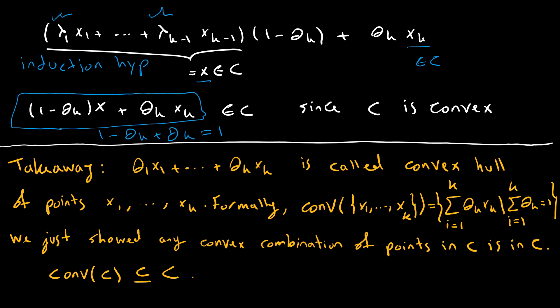So what is the takeaway of this problem? θ₁ times x₁ plus dot dot dot plus θ_k x_k is called convex combination. That is the convex combination of points x₁ through x_k. Formally, when we write convex combination of any set of points, we can write it in this format, which is the assumptions of the problem. And we saw that any convex combination of points in C is back in C. That means the convex hull, which is the set of all convex combination of C, is an element of C.